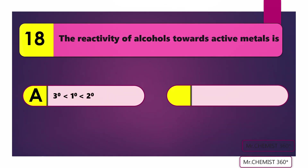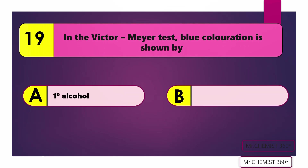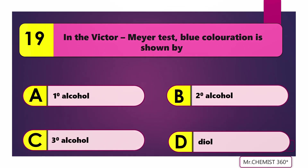Question 18: The reactivity of alcohols towards active metals is? Answer: Tertiary less than secondary less than primary. Question 19: In the Victor Meyer test, blue coloration is shown by? Answer: Secondary alcohol.